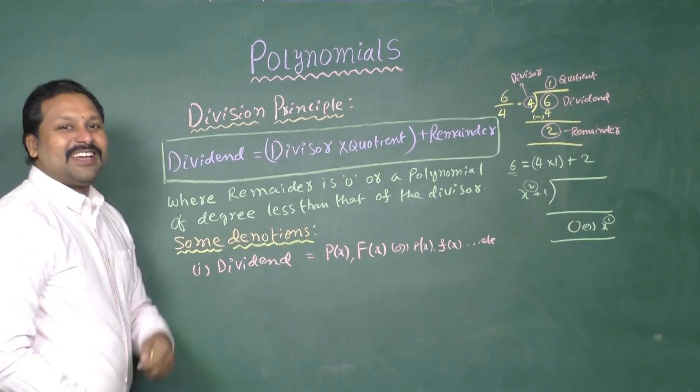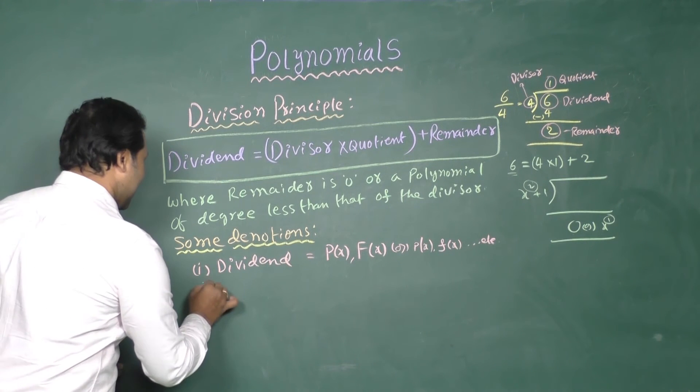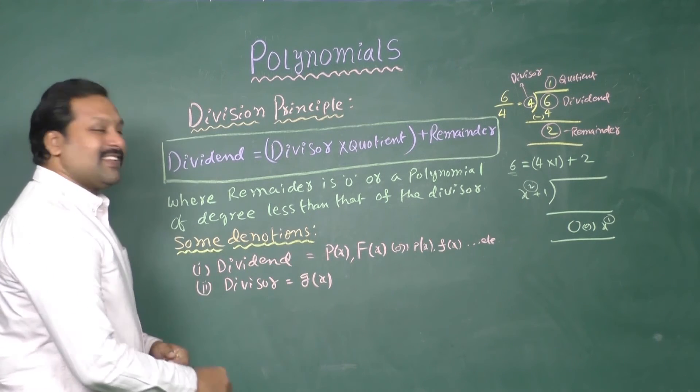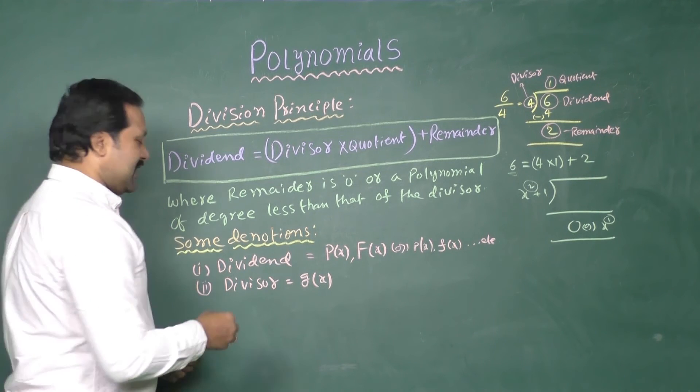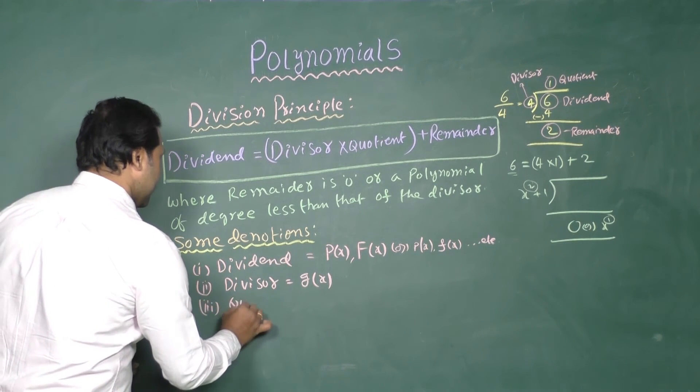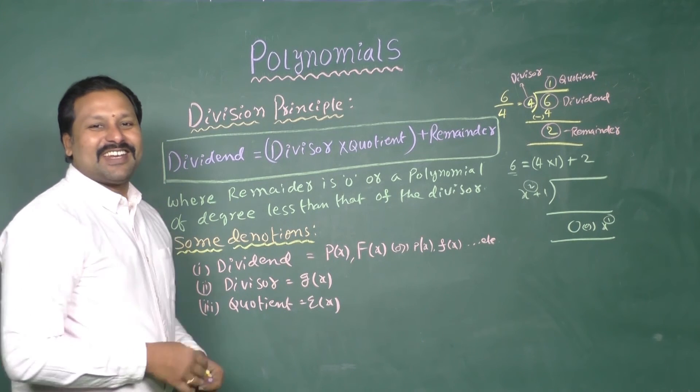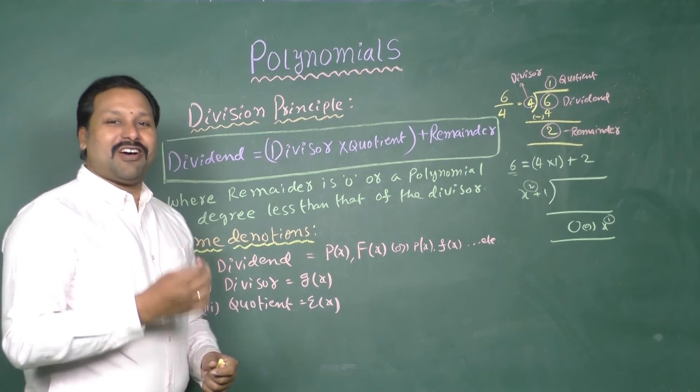And second one. Divisor is denoted by g of x. Quotient is denoted by q of x. Remainder is denoted by capital R or small r of x.